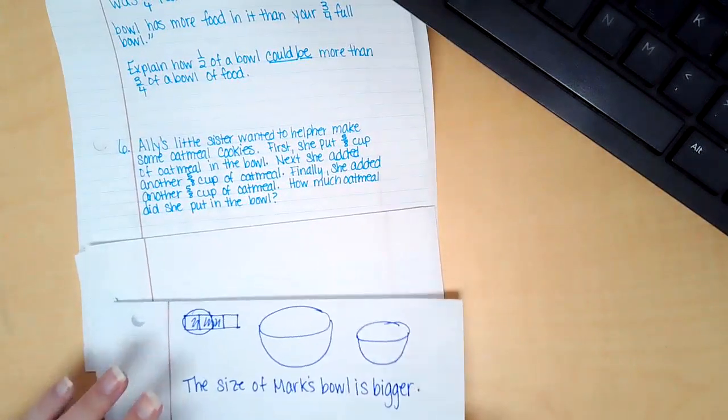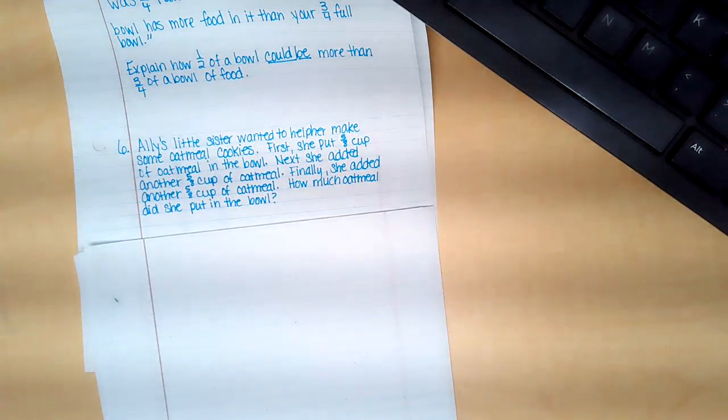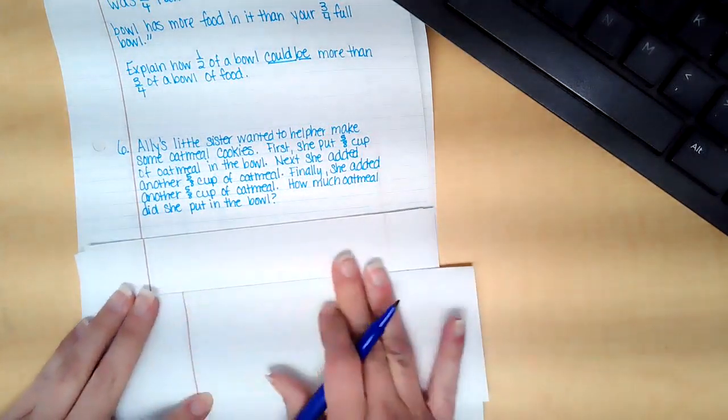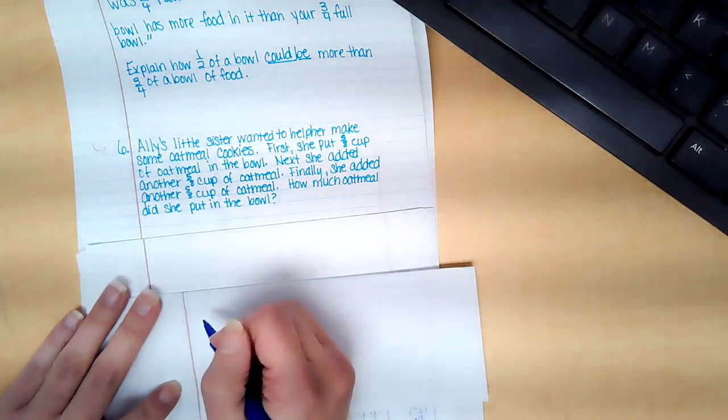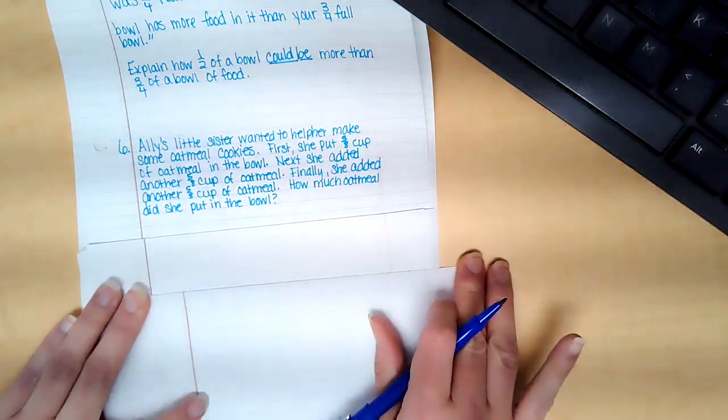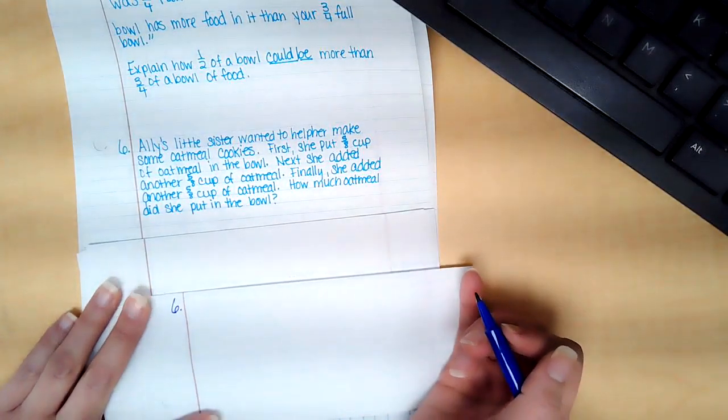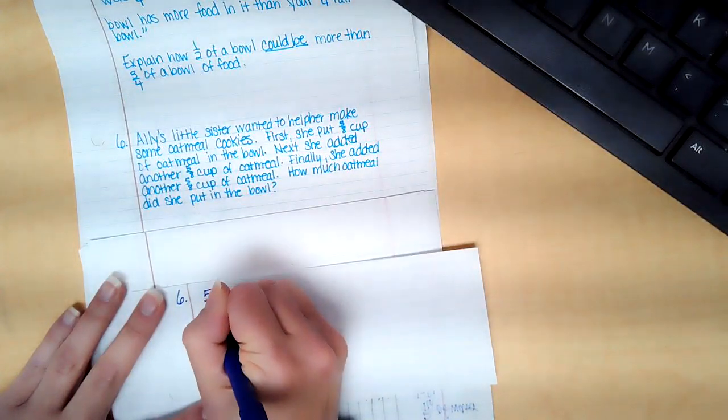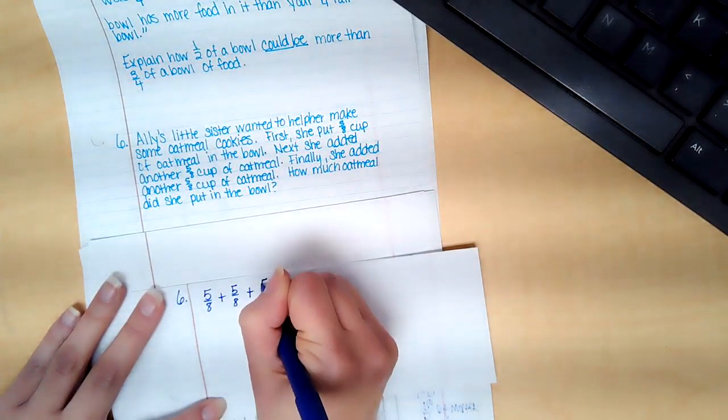Okay, so let's look at the next one. Ali's little sister wanted to help her make some oatmeal cookies. First, she put five eighths cup of oatmeal in the bowl. Next, she added another five eighths cup of oatmeal. Finally, she added another five eighths cup of oatmeal. How much oatmeal did she put in the bowl? So you could solve this several different ways. You could just add it straight across: five eighths plus five eighths plus five eighths.